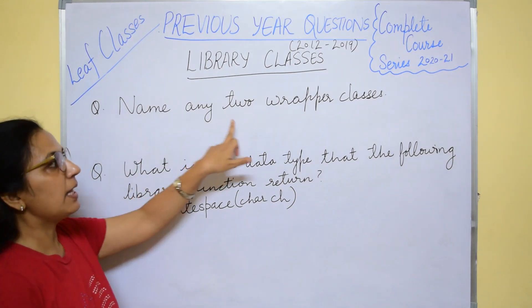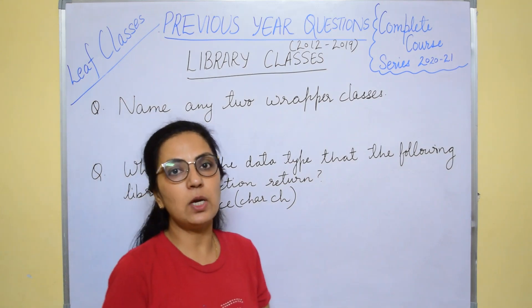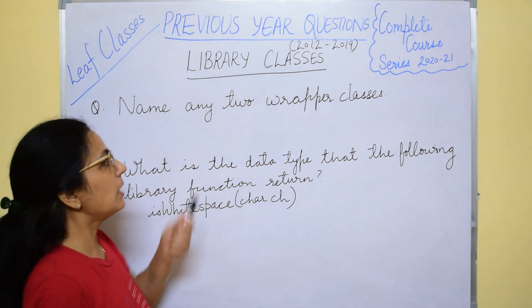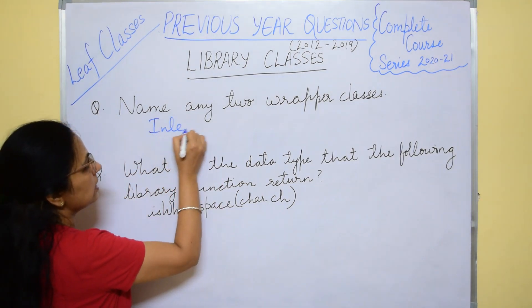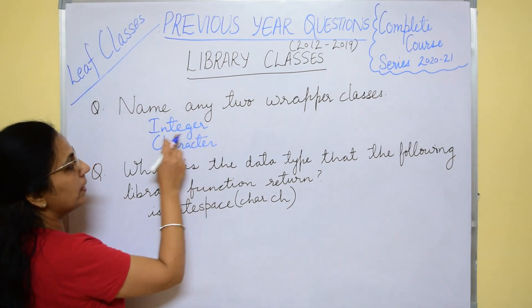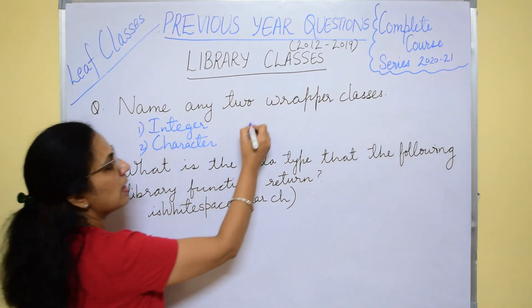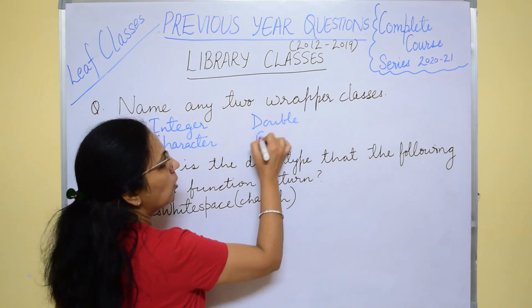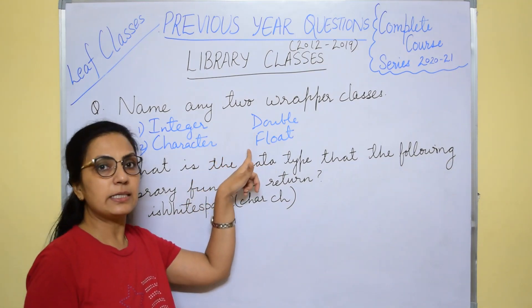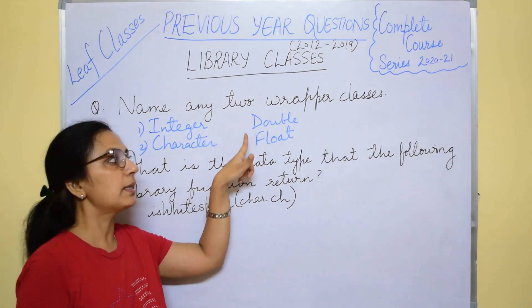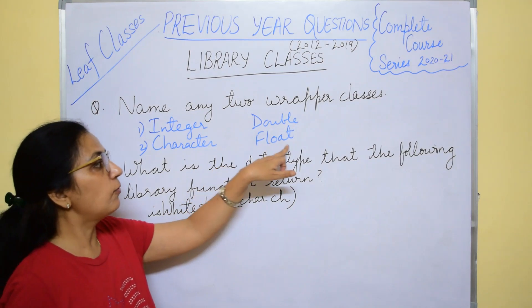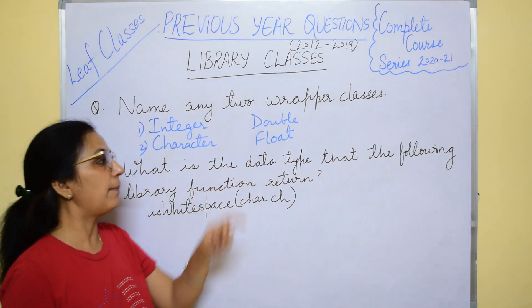Now moving to year 2013. The first question is: name any two wrapper classes. I mentioned many wrapper classes for each primitive data type in the last video, so you have to mention any two here. For example, Integer and Character — these are wrapper classes for data type int and char. Apart from these, you also have Double, Float and more. Any two you need to mention.